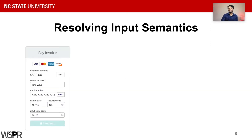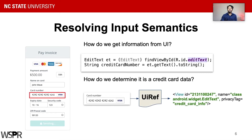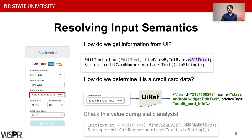Usually credit card numbers are provided to the application through its user interface. The programmatic approach is to grab a reference of the UI widget by calling the findViewById method and then call the getText method. We use our prior tool UIRef, which uses natural language processing on any label or hint associated with the UI widget to determine what kind of data it is collecting. We extract the resource identifier of the widget collecting the credit card number and provide that to the next phase of our analysis.